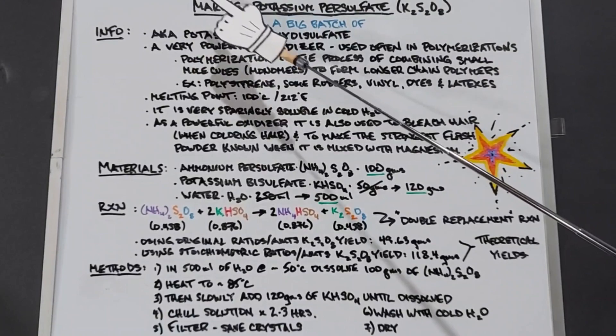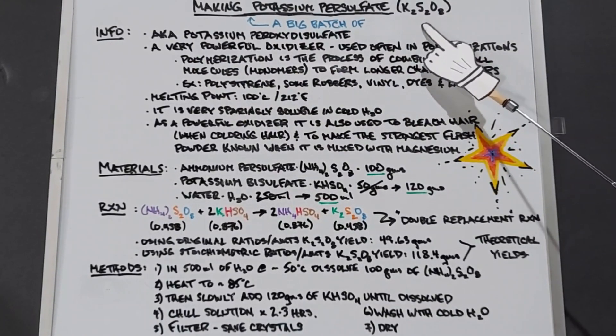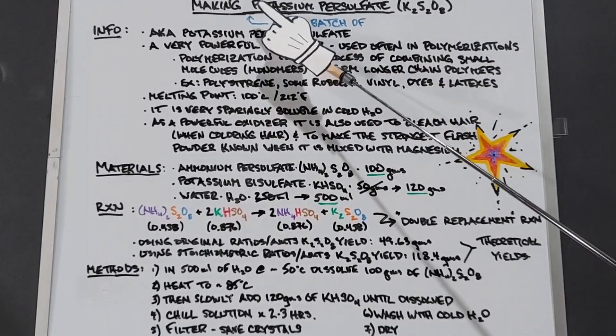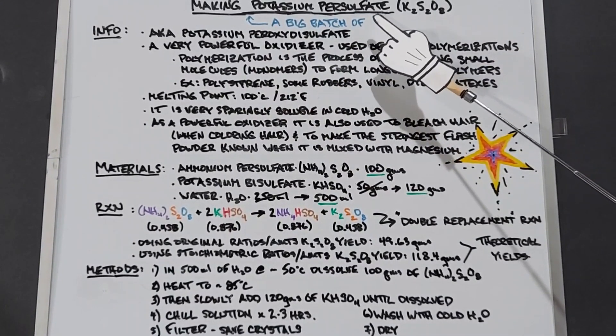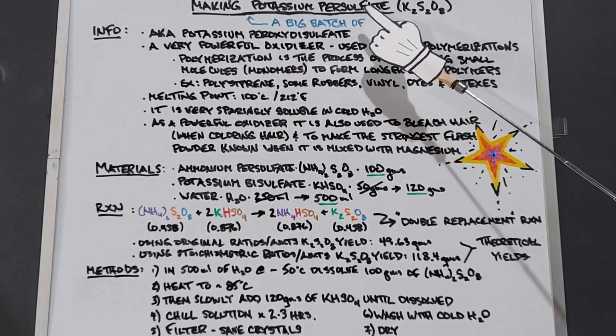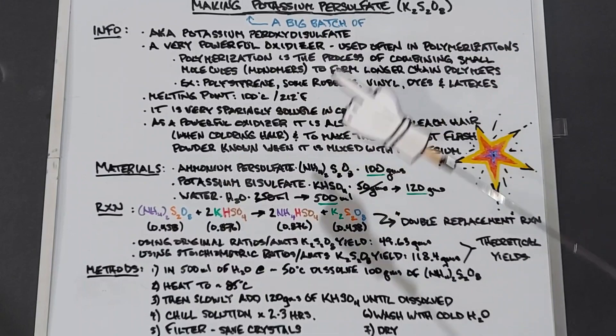In this video, we're going to be looking at making a big batch of potassium persulfate, K2S2O8. I originally did a video on this and was just testing how to make it, so the quantity was rather small. It did work, but since then I've done a lot more research on potassium persulfate, and I'm going to go over that in this video.